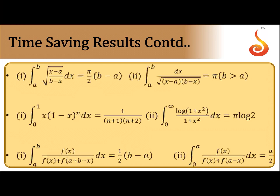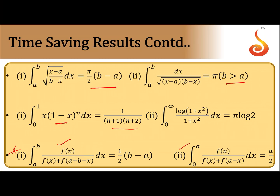Other standard results: ∫ₐᵇ √[(x−a)(b−x)] dx = π(b−a)²/4 where b > a. And ∫₀¹ x^m (1−x)^n dx — applying the formula ∫₀ᵃ f(x) dx = ∫₀ᵃ f(a−x) dx — gives 1/[(n+1)(n+2)]. Most importantly: ∫ₐᵇ f(x)/[f(x) + f(a+b−x)] dx = (b−a)/2. These are the most important results to apply directly when solving problems.